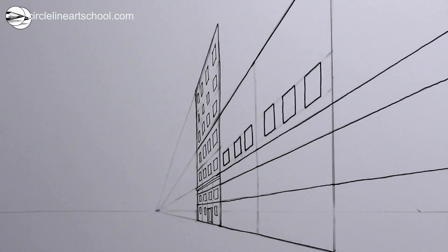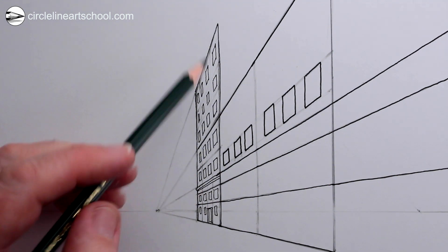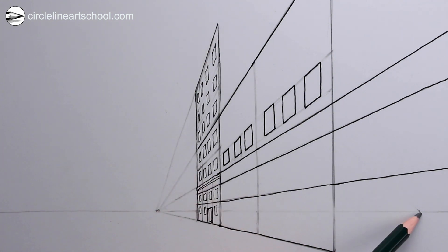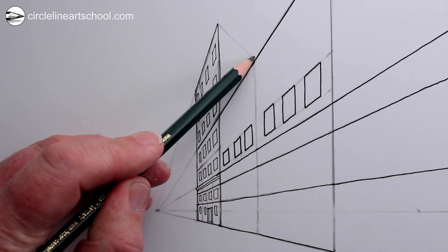Next you could extend the grid lines to the right and add more windows. Now we can use the second vanishing point on the right for the top right of the tallest building which is receding in that direction.